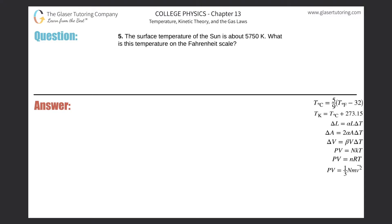Number five. The surface temperature of the sun is about 5750 Kelvin. What is this temperature on the Fahrenheit scale?